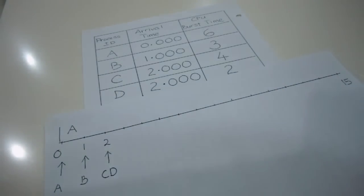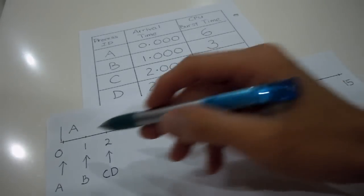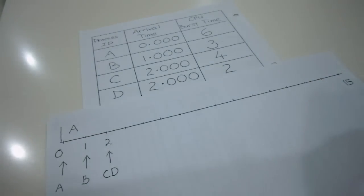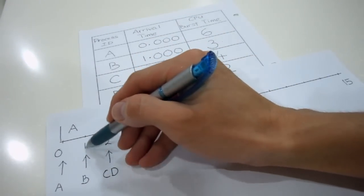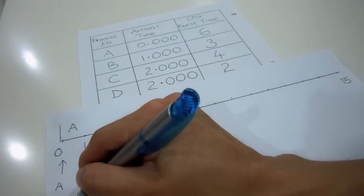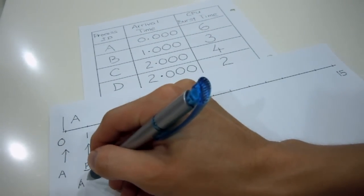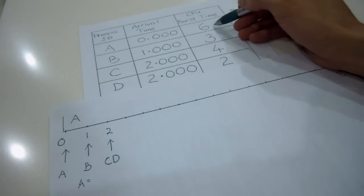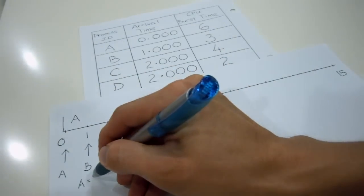Okay, so because the shortest remaining time first is a kind of preemptive version of shortest job first, it's a little bit different from shortest job first whereby your process running may be interrupted by other processes who are having a higher priority. So in this case, who are having a lower burst time. So at each arrival for these processes, you've got to check the CPU burst time. So for this case, at time equals 1, when there's an arrival of a new process, I need to check back, what is my time right now?